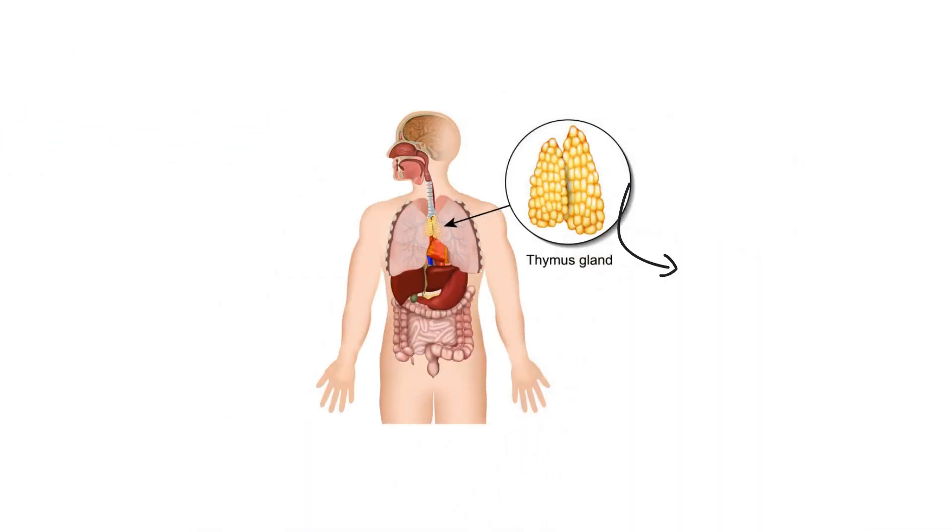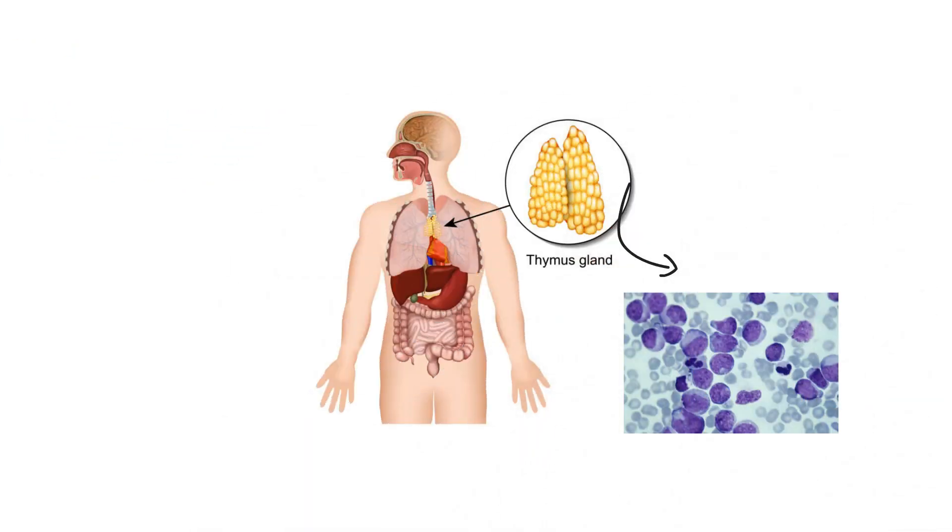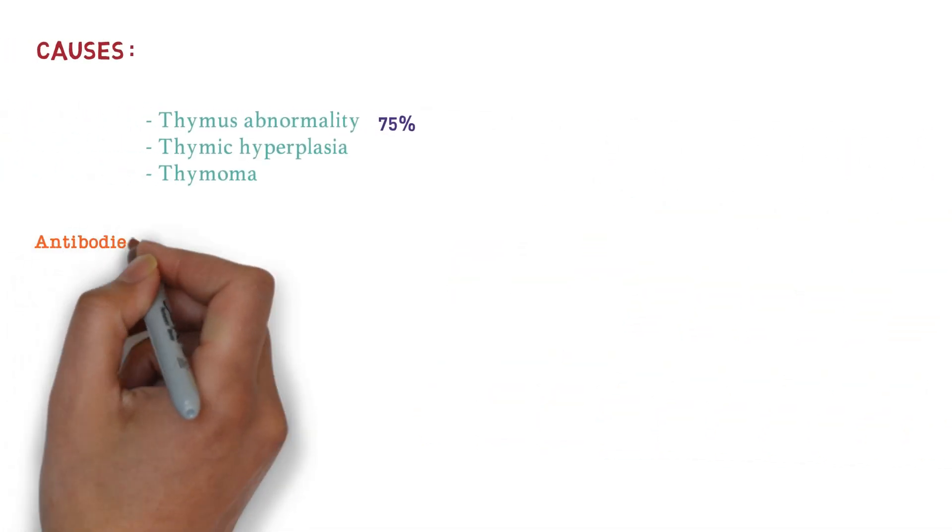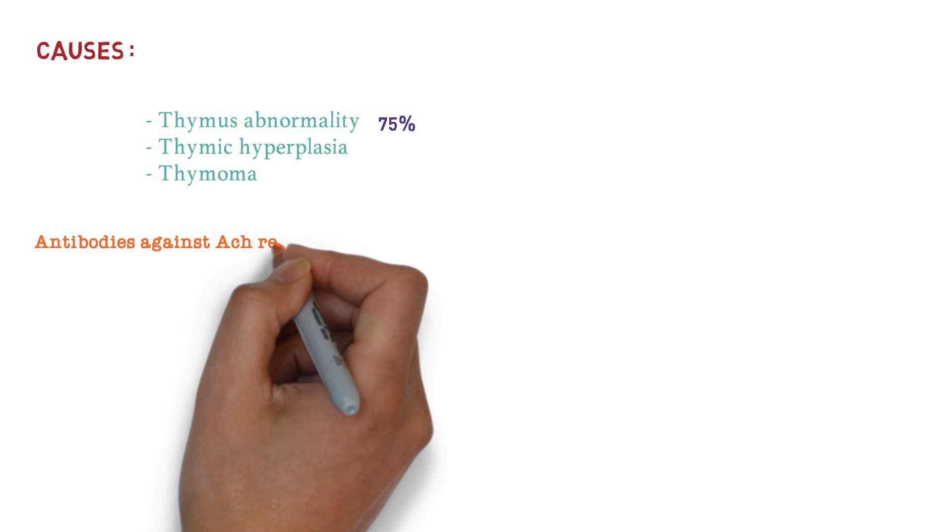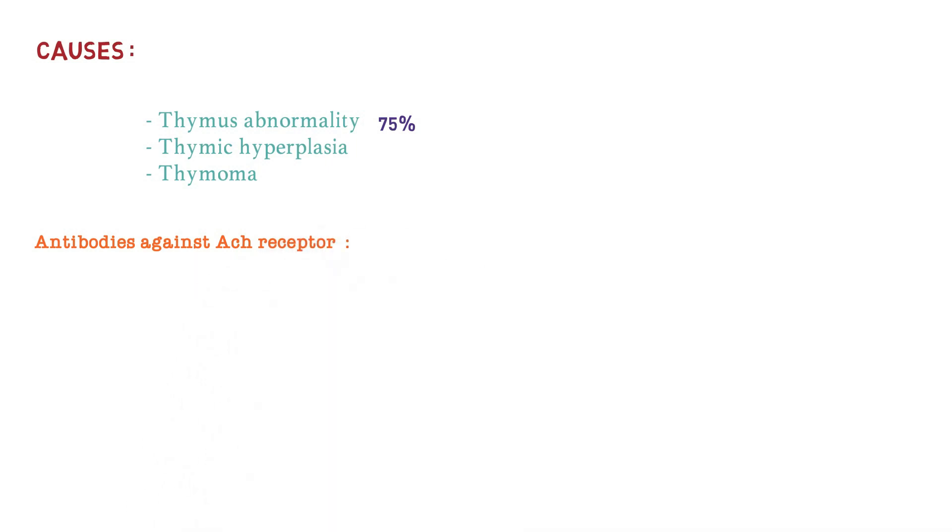In the thymus, there are myeloid cells which contain allo antigens. The allo antigens have chemical structure resemblance to acetylcholine receptor, so there is formation of antibodies. We have some important antibodies to learn in this disease.